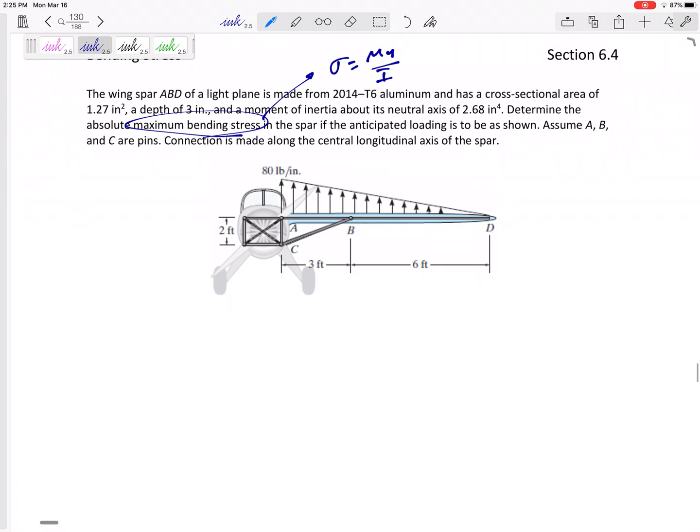Alright, so we've got this distributed load. From my statics, at A I might have - let me draw this a little better - at A I've got a pin, so I might have an Ay and an Ax. I've got this distributed load that I could replace with one force at one third closer to the taller height.